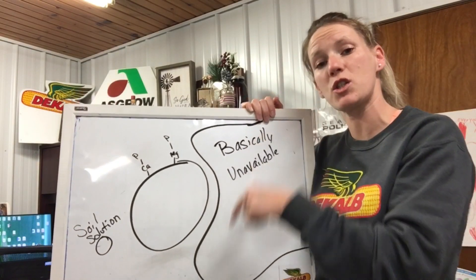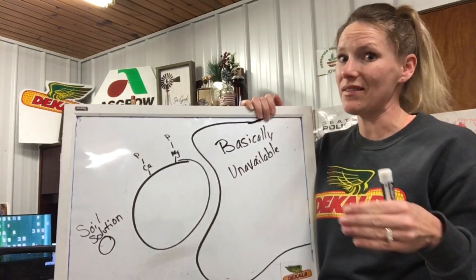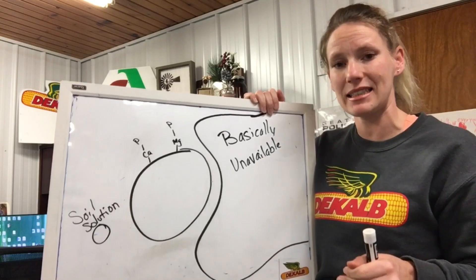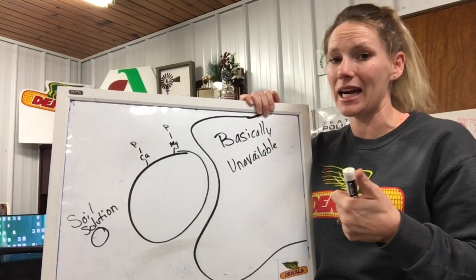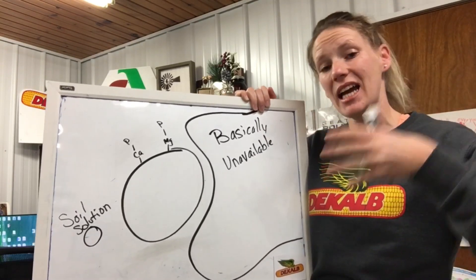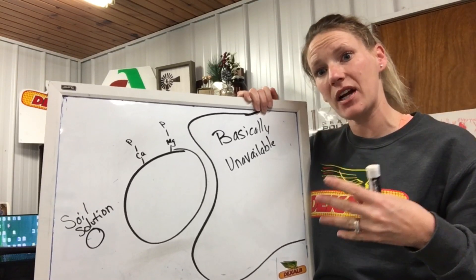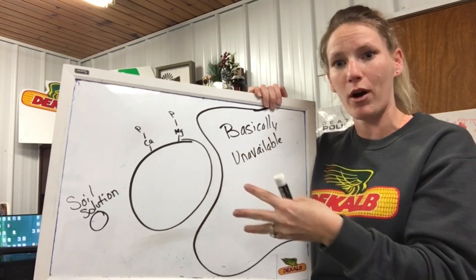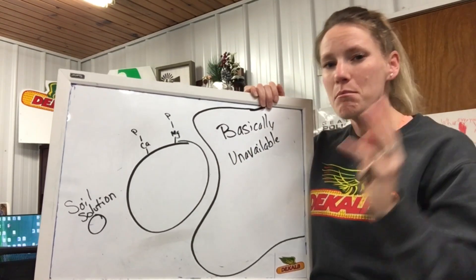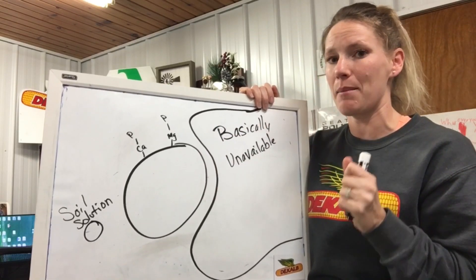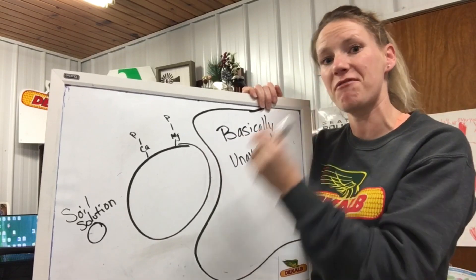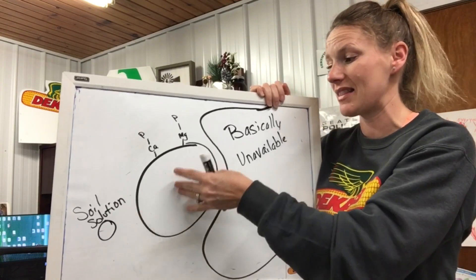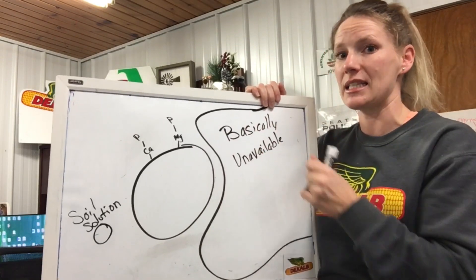When we think about phosphorus in our soils, we have to think about it a lot differently than we do potassium, where potassium doesn't get tied up in our organic matter — it just kind of lives out there in the soil solution, living on the surface of our soil particles, and it moves a lot easier and a lot better than something like phosphorus does. And that's because when we think about phosphorus, we have to think about it in these three different pools.